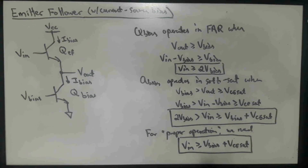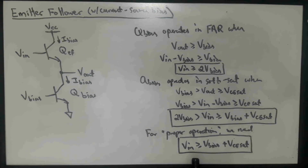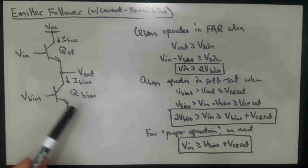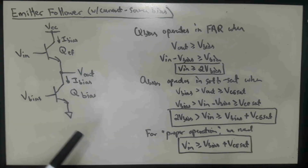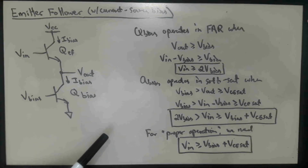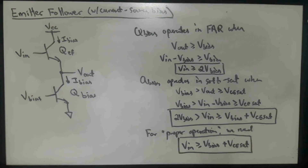That defines the region of the input voltage range where our assumption about Q_bias operating in the forward active mode is self-consistent. Next time, we're going to consider what would happen if we assume a finite beta so that alpha is not one, and what would happen to this picture if we assume a finite early effect. We'll put those pieces into the analysis one at a time and see how that affects our picture. That's it for this segment.